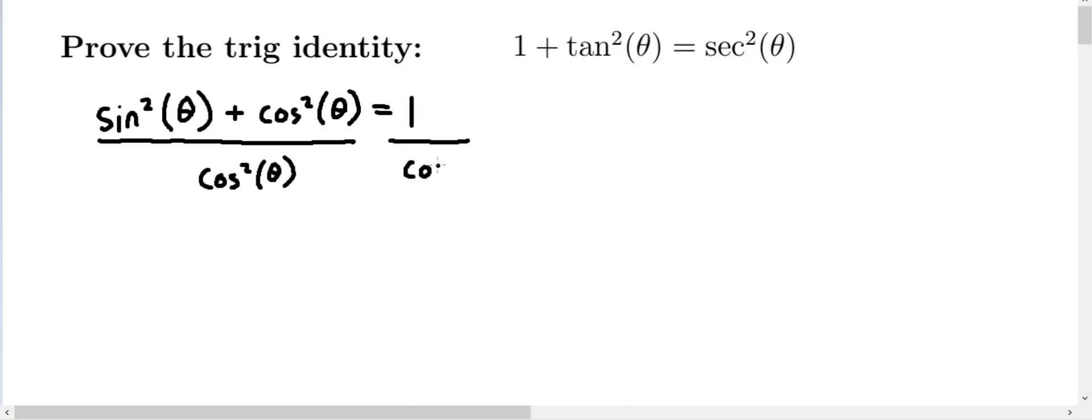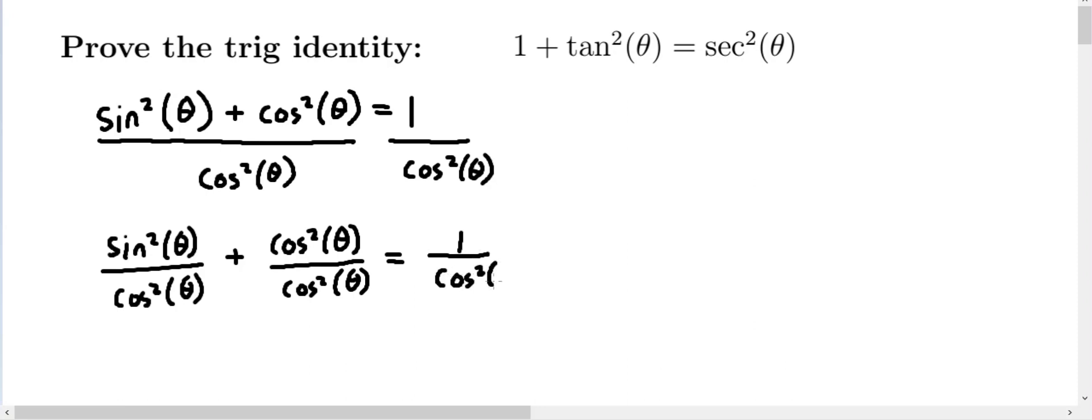And so, we can break up this sum on the left-hand side to read like this: sine squared of theta over cosine squared of theta, and then add that to cosine squared of theta over itself. The right-hand side remains unchanged, 1 over cosine squared of theta.